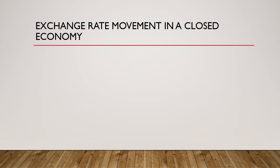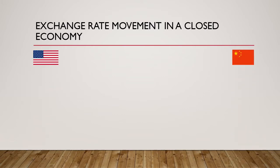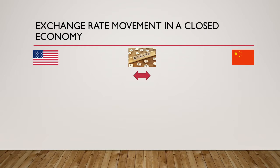Now, let's see how exchange rate movement happens in a closed economy. By closed, I mean when two countries are not trading with each other — that will act as a reference point going further in the presentation. Let's assume two countries: America and China. The demand in this case will be stable, so the demand for each country is stable and the supply within each country is able to meet the demand for goods and services.